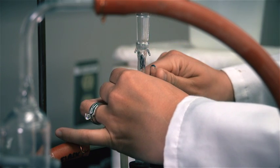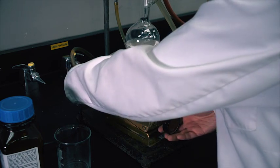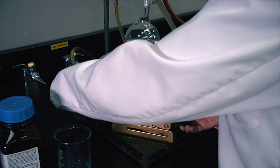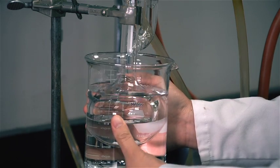Open the system by opening the stopcock on the safety bottle. Remove the heat source and set it aside. Do not turn it off. Cool the liquid in the boiling flask using an ice water mixture if required.